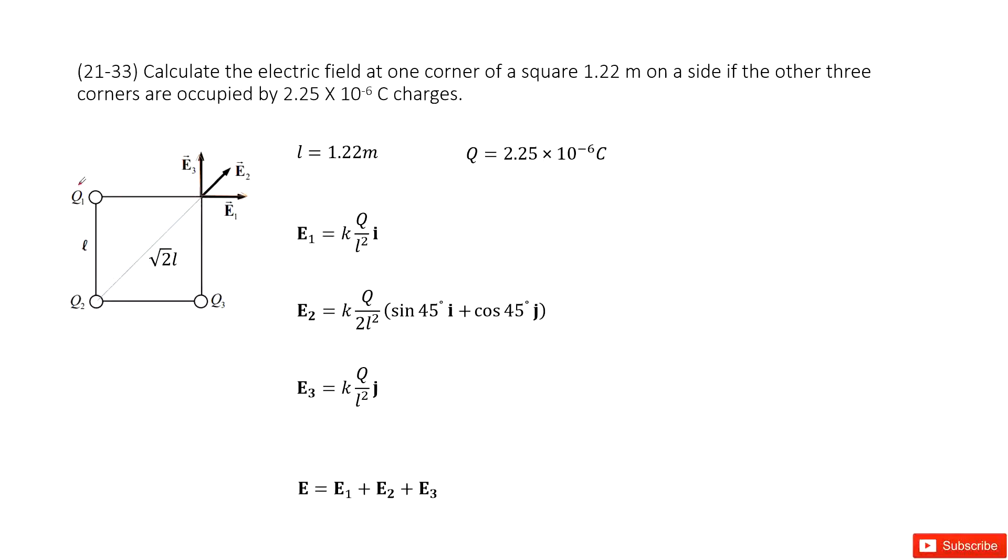Another three corners are occupied by charges with equal charge quantity Q. We call these Q1, Q2, Q3, and the charge each carries is Q.